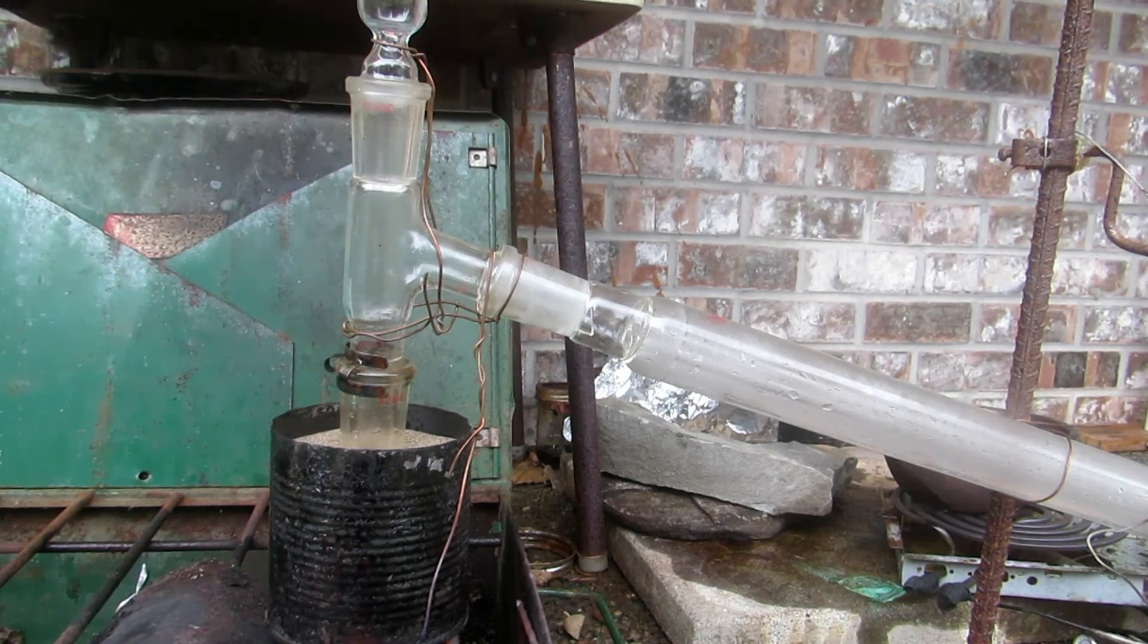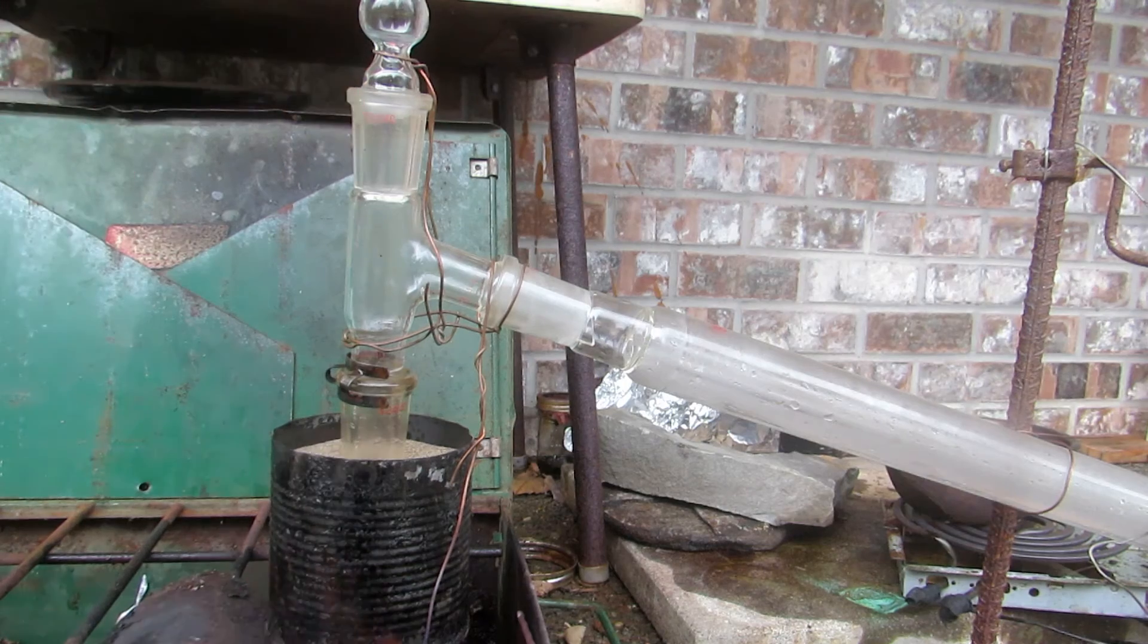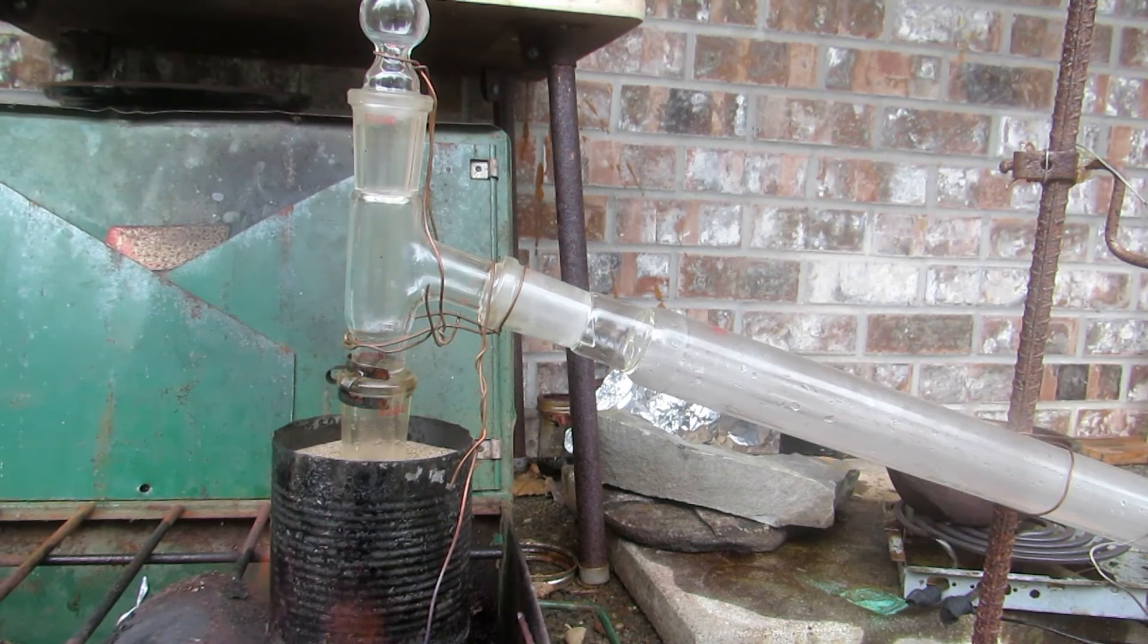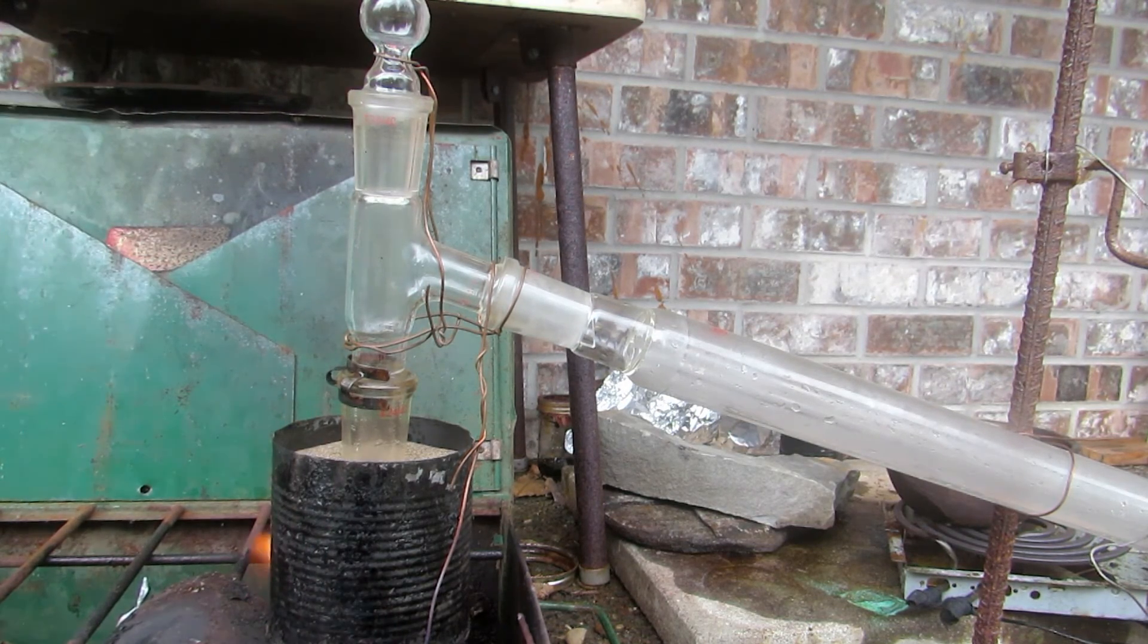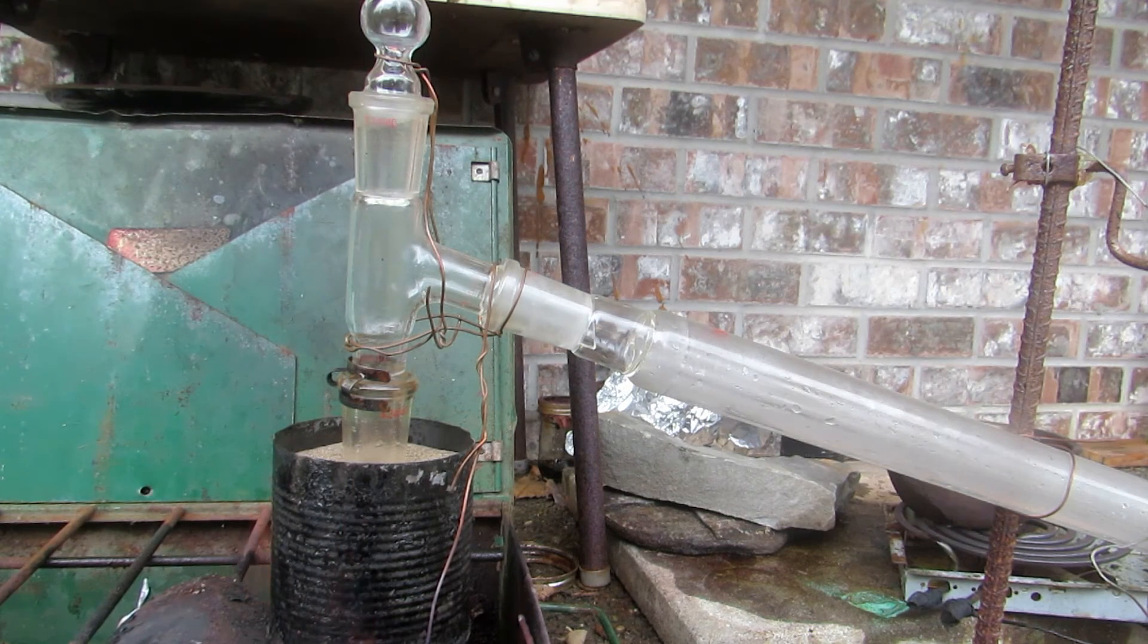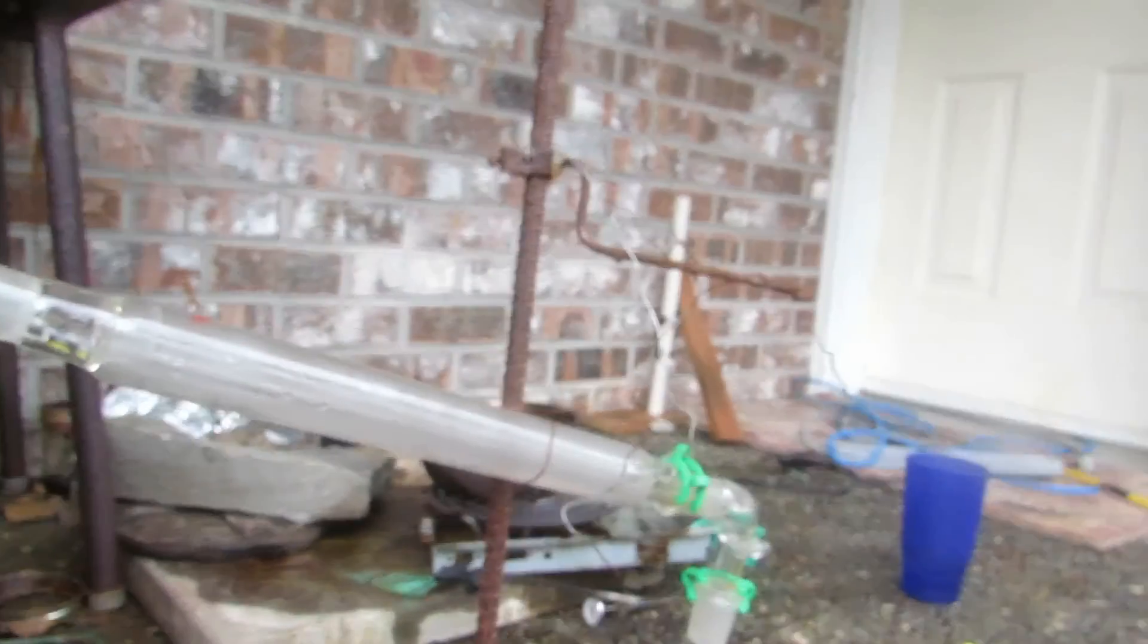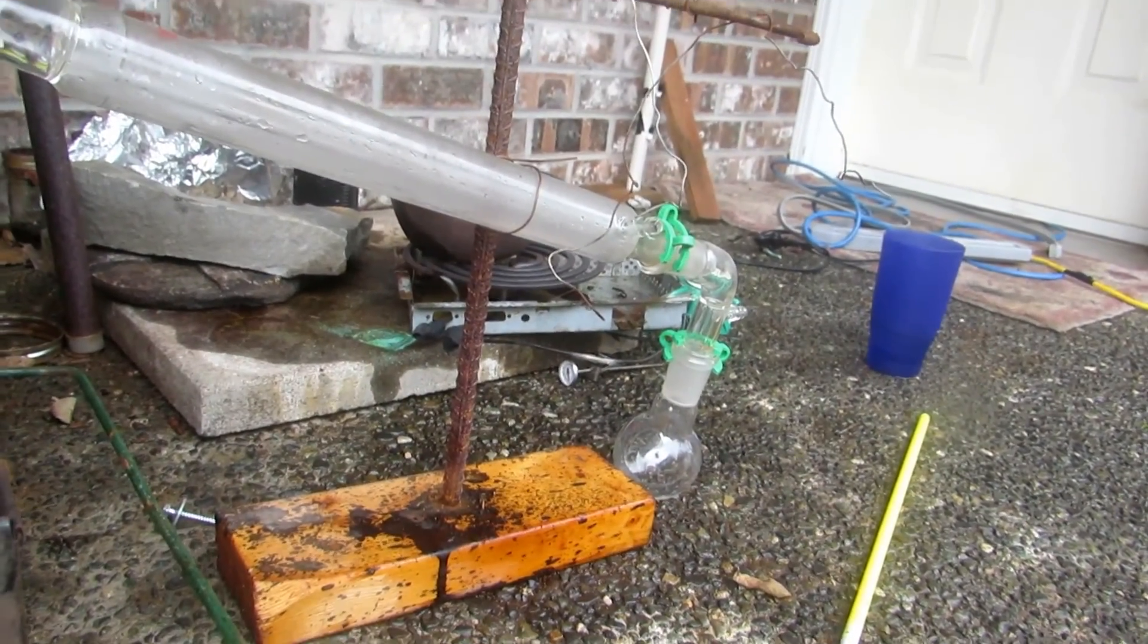I couldn't find all my Keck clamps, so I wired the rest of the apparatus together with copper wire. I greased the joints with sulfuric acid because it has a high boiling point and should handle the high temperatures that the methyl salicylate will distill at. At the cooler end, I just used Keck clips.